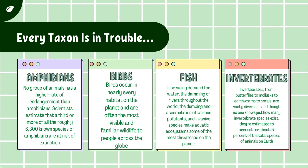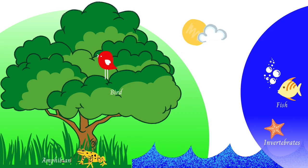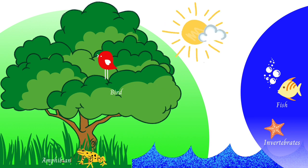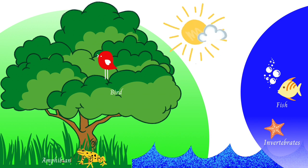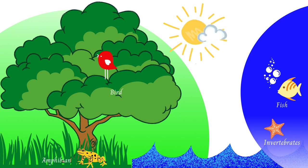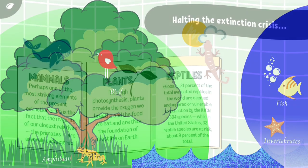Invertebrates: of the 1.3 million known invertebrate species, the IUCN has evaluated about 9,526 species, with about 30% of species evaluated at risk of extinction. Freshwater invertebrates are severely threatened by water pollution, groundwater withdrawal, and water projects, while a large number of invertebrates of notable scientific significance have become either endangered or extinct due to the rapid destruction of tropical rainforests.